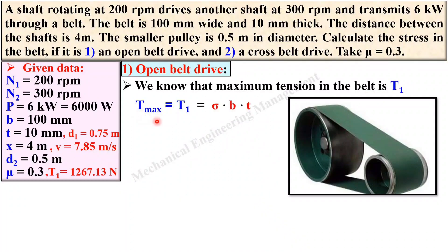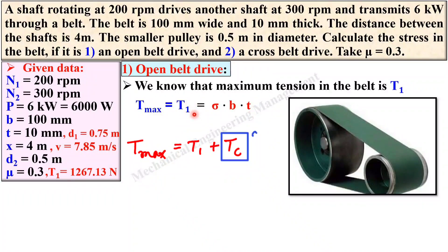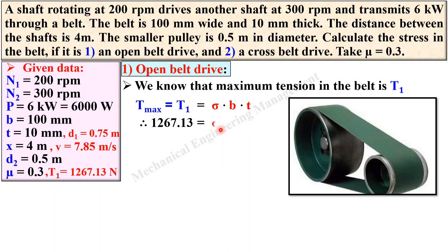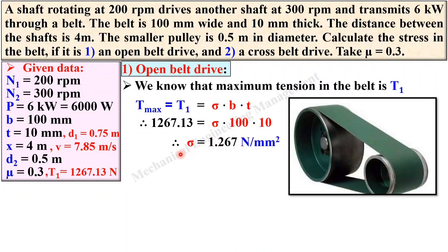The maximum tension in the belt is t_max = t1 + tc. Since there is no description of centrifugal tension, tc ≈ 0, so t_max = t1. And t_max = σ × b × t. Putting t1 = 1267.13 N, b = 100 mm, t = 10 mm and simplifying, we get σ = 1.267 N/mm². This is the stress in the belt for the open belt drive case.